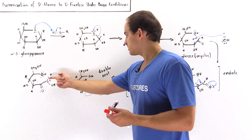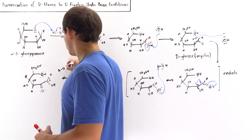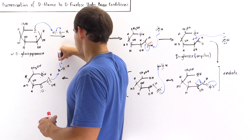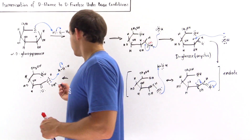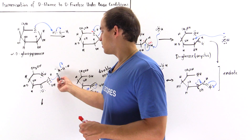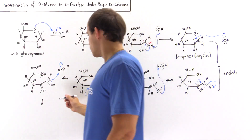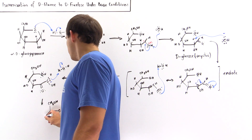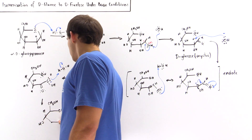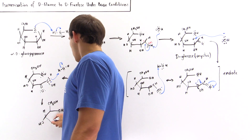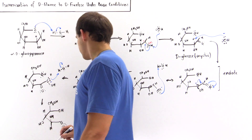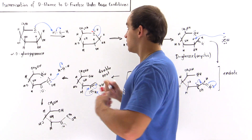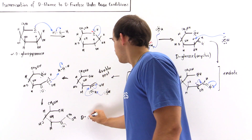In the next step, water acts to donate one of its H atoms to the carbon bearing the two electrons, forming hydroxide and our product. We basically replace the aldehyde group with a ketone. The open-chain D-fructose looks like this: OH, CH2OH primary alcohol group, H, OH, double bond between carbon and oxygen, OH pointing to the top, H pointing to the bottom, and CH2OH at the end.